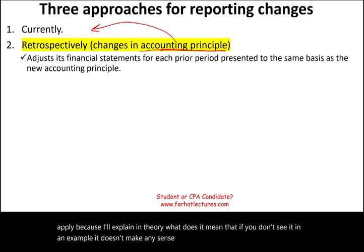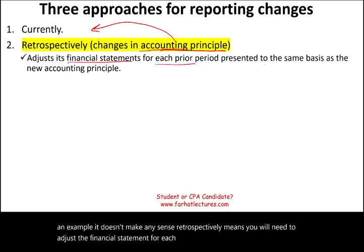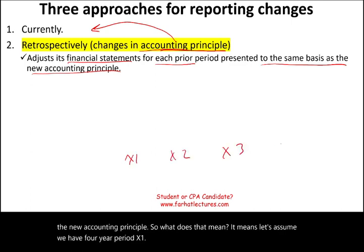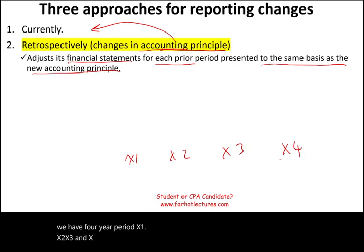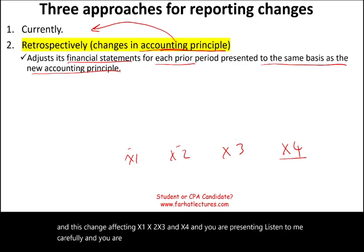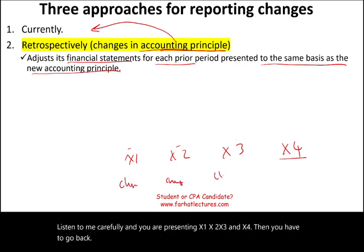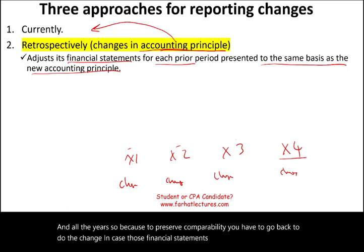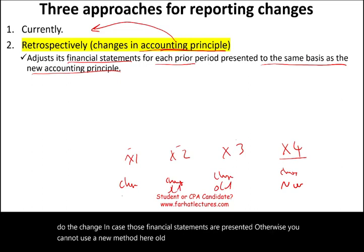Retrospectively means you will need to adjust the financial statements for each period presented to the same basis as the new accounting principle. For example, assume a four-year period: X1, X2, X3, and X4. If in X4 you made a change in accounting principle affecting X1, X2, X3, and X4, and you are presenting all four years, you have to go back and apply the change in all the years to preserve comparability. You cannot use the new method in X4 and the old method in X1, X2, and X3 if you are presenting all of them.